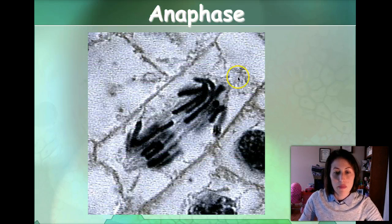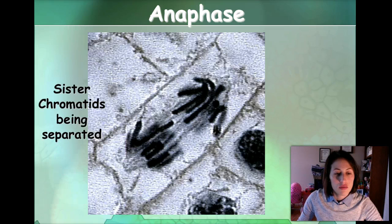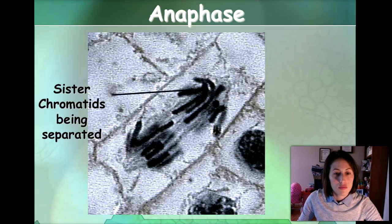Here is a picture of a plant cell in anaphase. You can see the chromosomes have pulled apart and they're moving towards the poles of the cell.